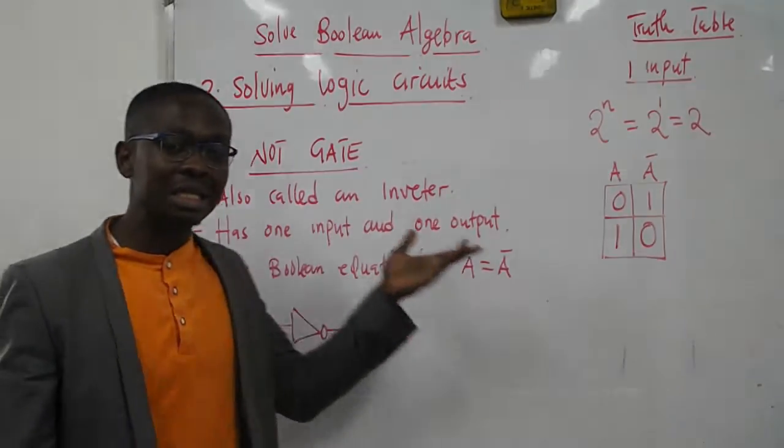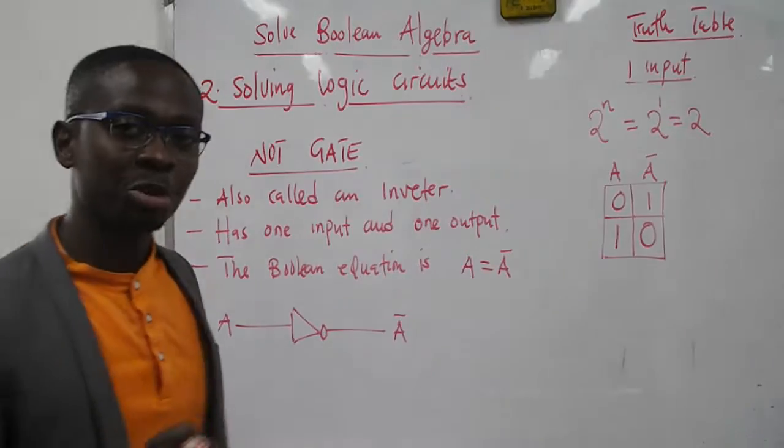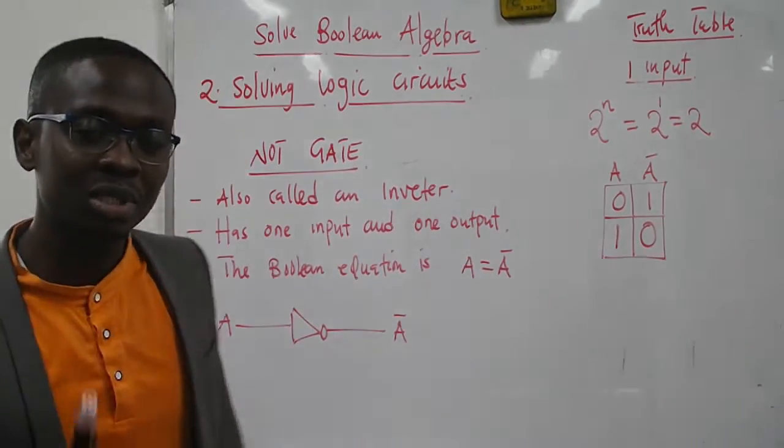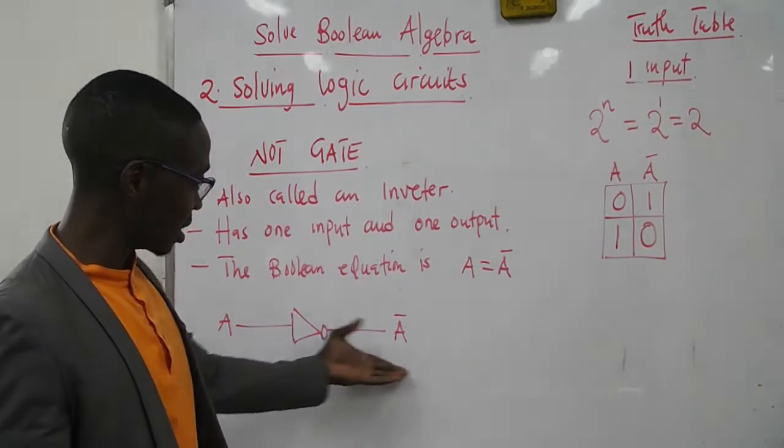In the NOT gate, a NOT gate is a gate which is also called an inverter. It is special in such a way that it only has one input and one output. The logic circuit is given as follows.